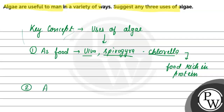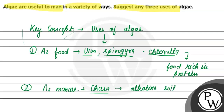Next use: algae is also used as manure — as a fertilizer. Calcium-containing green algae like Chara are used in acidic soils, while some other varieties are used in alkaline soils as well.